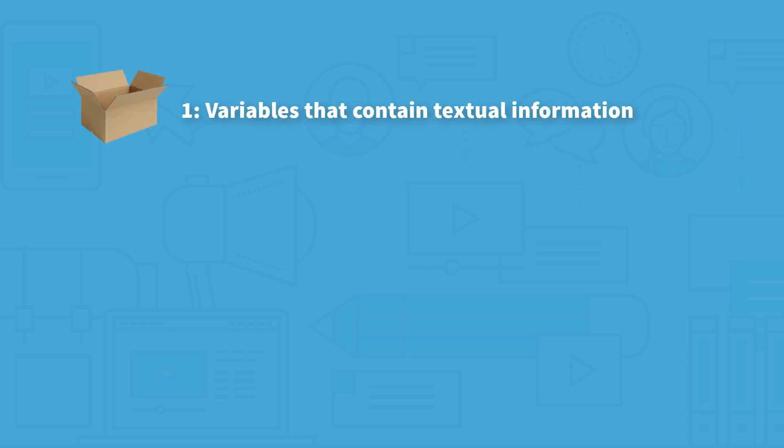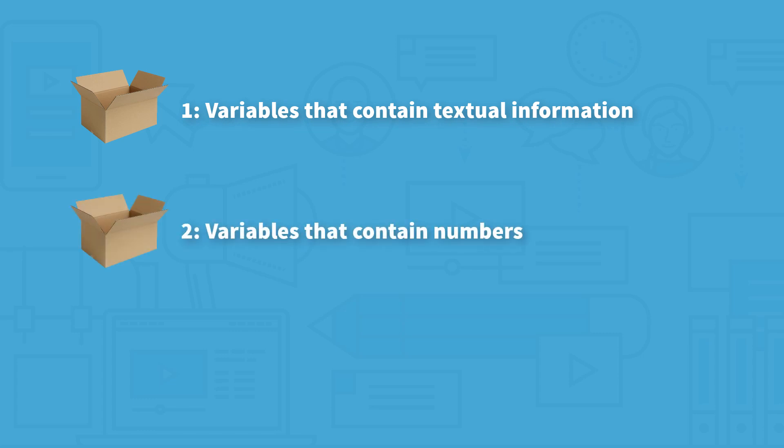In Storyline, you can create three different types of variables in which you can store values. The first type is text variables, where you can put in textual information. The second type is number variables, where you can put numbers and make calculations. The third type is a true-or-false variable — you can see it as on or off, like a light switch that is either on or off.